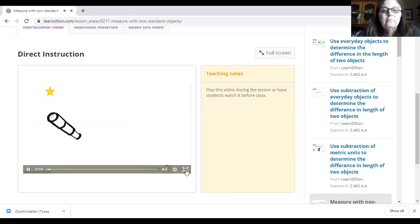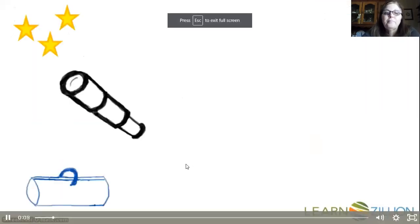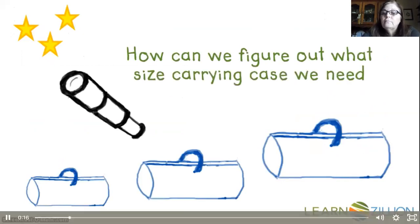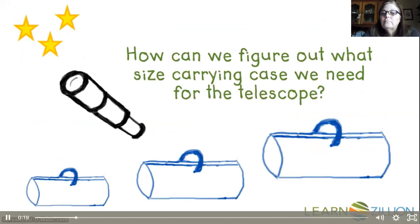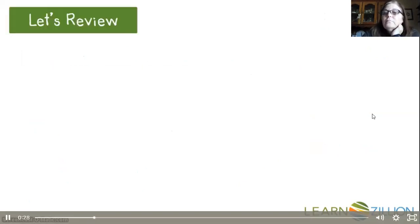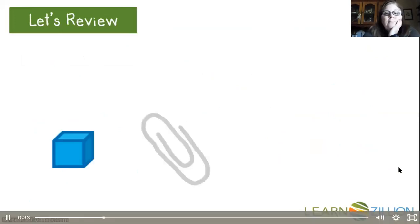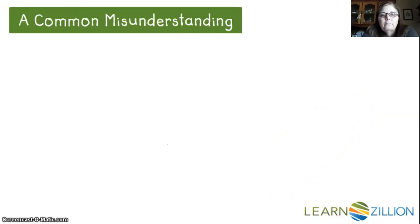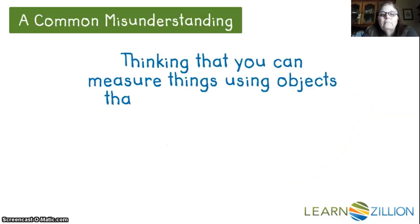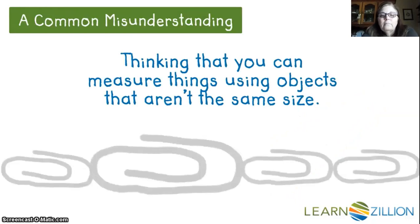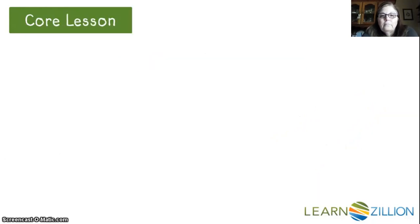I have a brand new telescope but I don't have a case for it. My friend is at the store and wants to know what size I need, but I don't have a ruler and neither does she. How can we figure out what size carrying case we need for the telescope — small, medium, or large? In this lesson, you will learn how to measure by using smaller equally sized objects. You already know how to compare the size of an object to another object — like a block, paper clip, or even your finger. These are objects you can use as non-standard units of length.